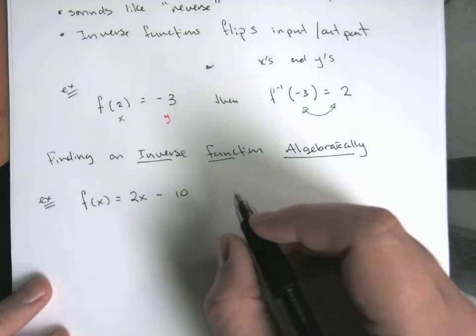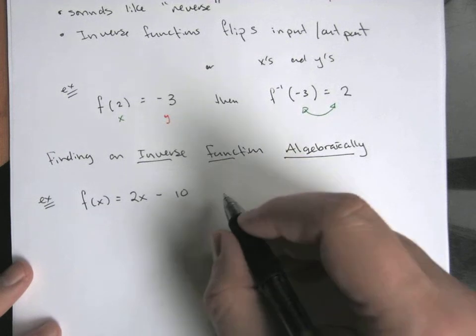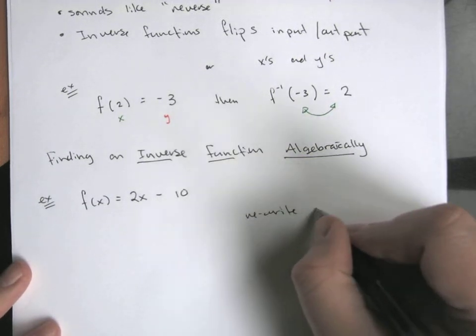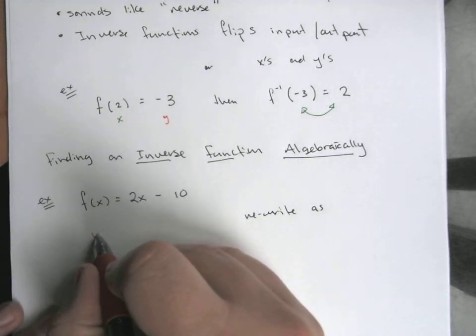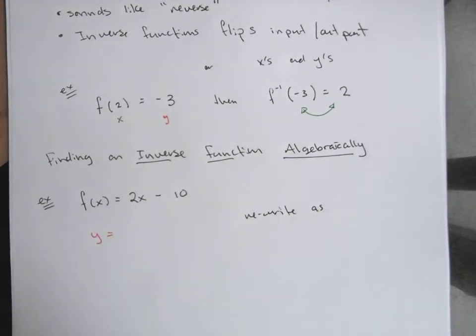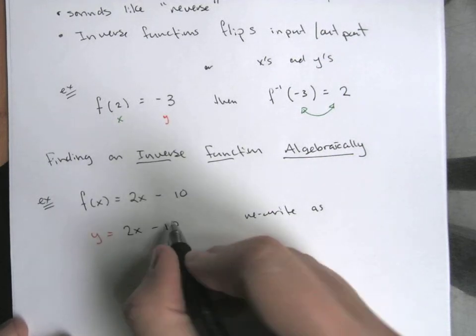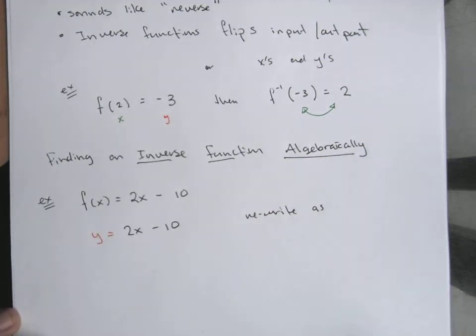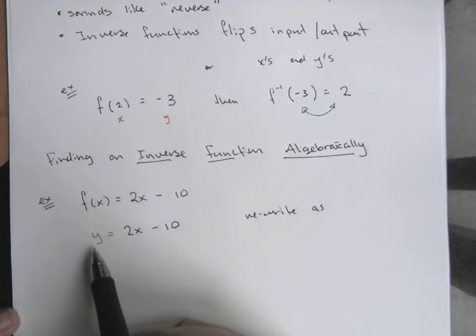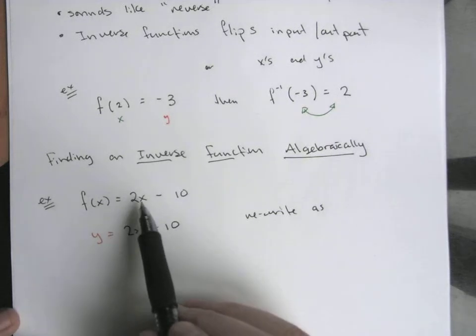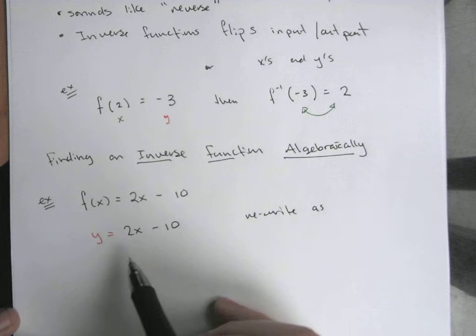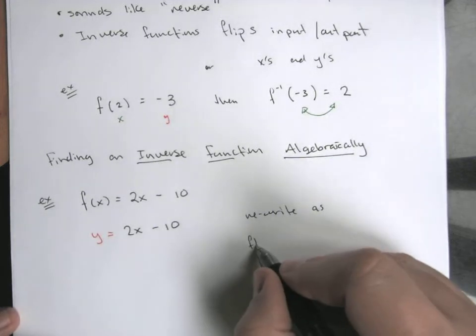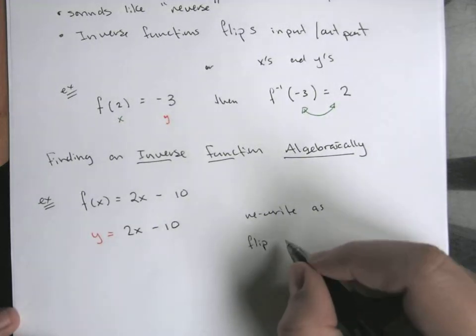We need to be more thoughtful about the order. The strategy here is start with this, rewrite it as y equals 2 times x minus 10. We'll be more clear about f(x) is supposed to be a y value. This is really a y and an x.